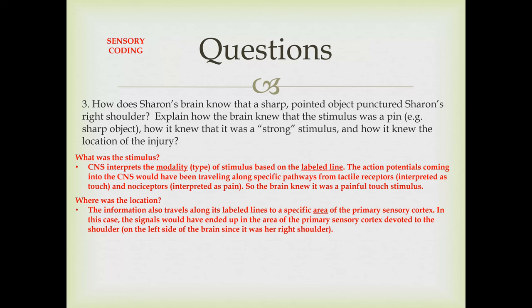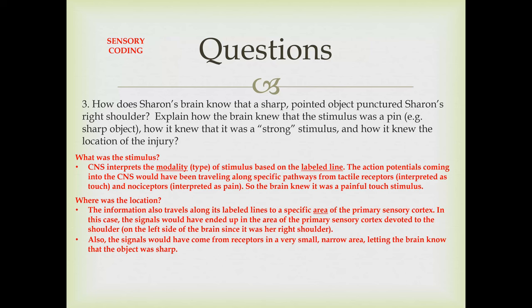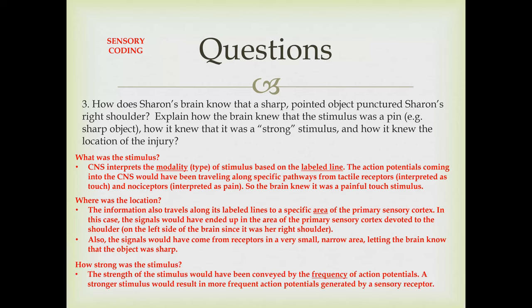For location: the information travels along labeled lines to a specific area of the primary sensory cortex — in this case, the area devoted to the shoulder. Since it was her right shoulder, it would go to the shoulder region on the left side of the brain, in the left primary sensory cortex, because information crosses over from one side to the other. The signals came from receptors in a very small, narrow area of skin, letting the brain know the object was sharp. The strength of the stimulus is conveyed by the frequency of action potentials — a stronger stimulus results in more frequent action potentials.